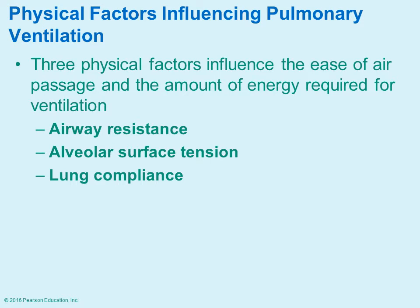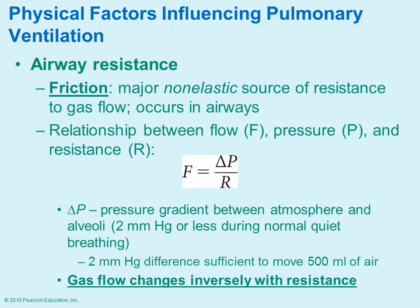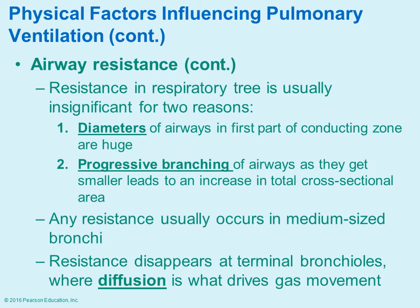There are three physical factors that play a role in how well the air passage allows air to flow through it and the amount of energy required: airway resistance, alveolar surface tension, and lung compliance. Airway resistance refers to things like friction — anything that impedes airflow. Gas flow changes inversely with resistance: as resistance increases, gas flow decreases. Diameter plays a role — if you decrease the diameter of the bronchial passageway, you increase the resistance, which decreases the amount of airflow.